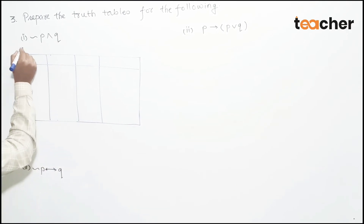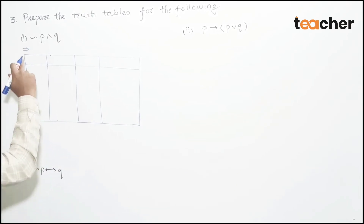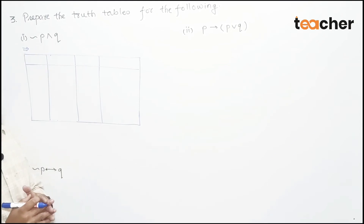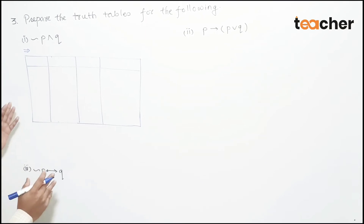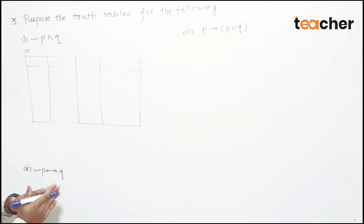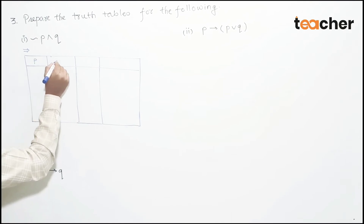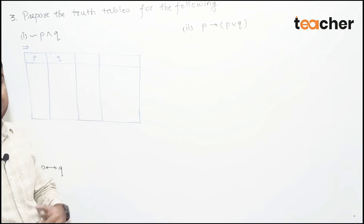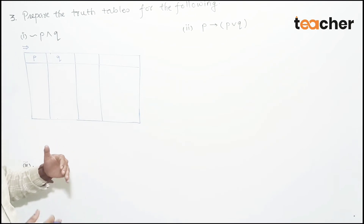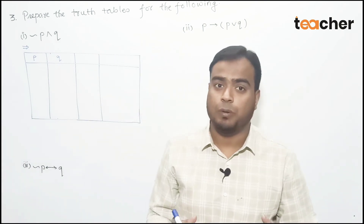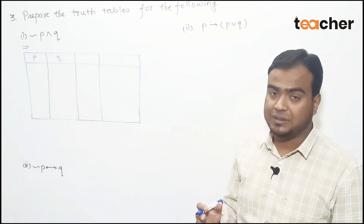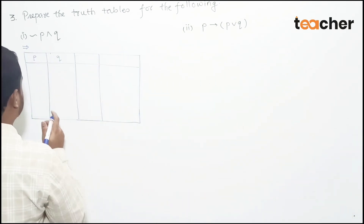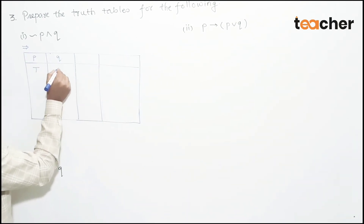Now we are going to learn how to convert a given symbolic form into a truth table. The first question: we have the statement involving negation of P conjunction Q. We consider all possibilities: P true and Q true, P true and Q false, P false and Q true, P false and Q false.